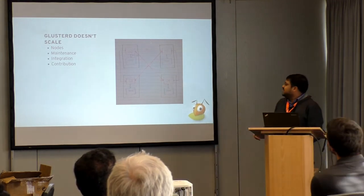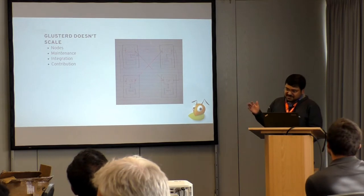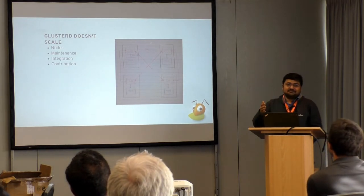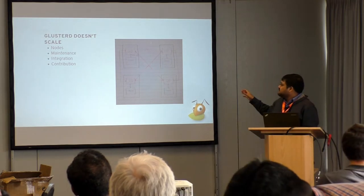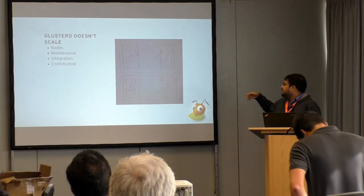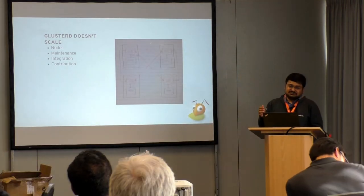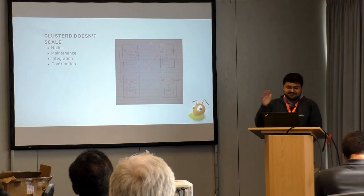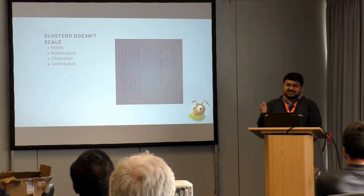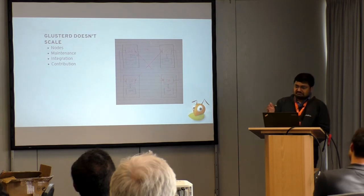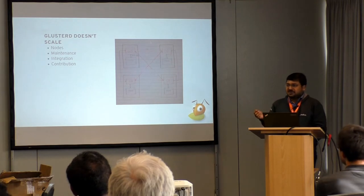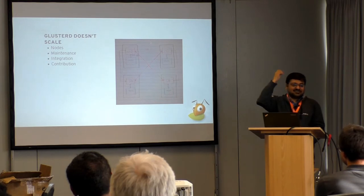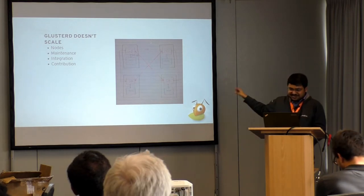We always end up in an inconsistent state or a split-brain state pretty easily, and managing that is hard. Apart from that, there are things like maintenance where the codebase has grown so large — it's like half of the GlusterFS code is in GlusterD right now. We've got three different mechanisms to orchestrate operations and lots of copy-pasted code. Whatever Jeff said yesterday probably applies completely to GlusterD right now.